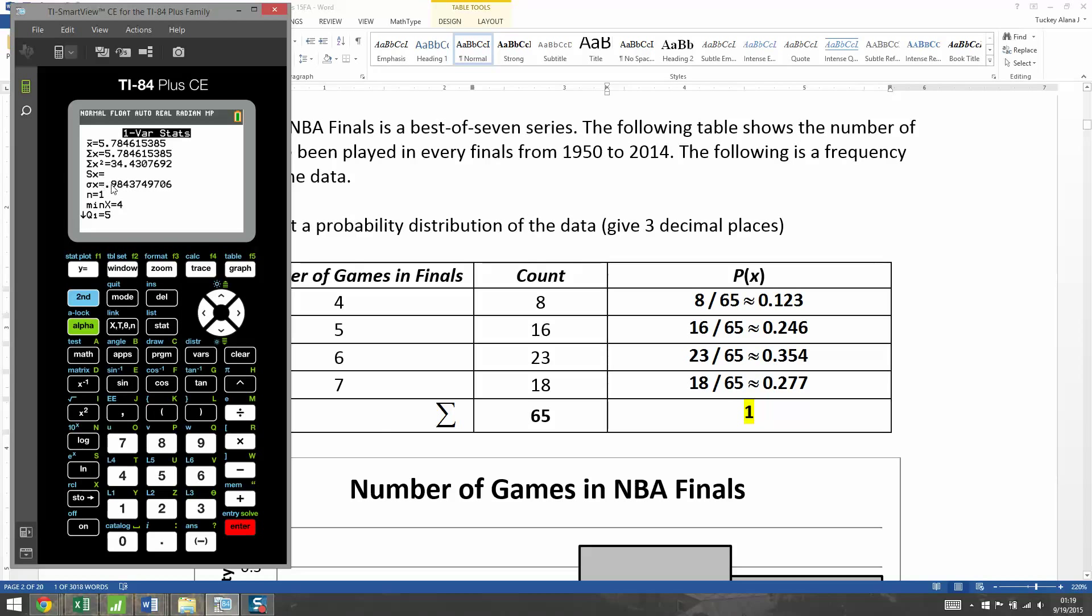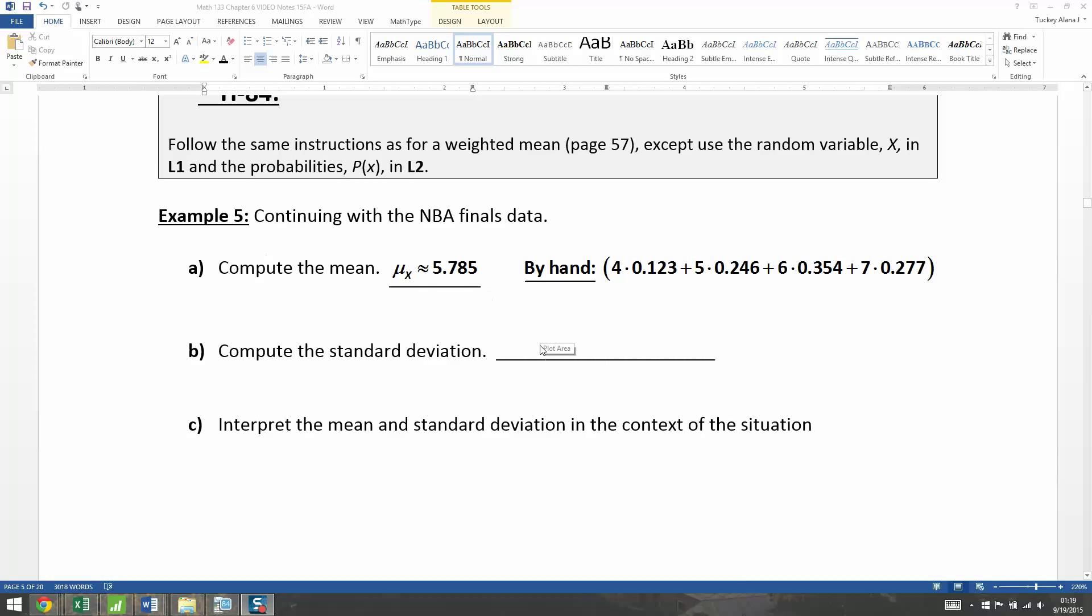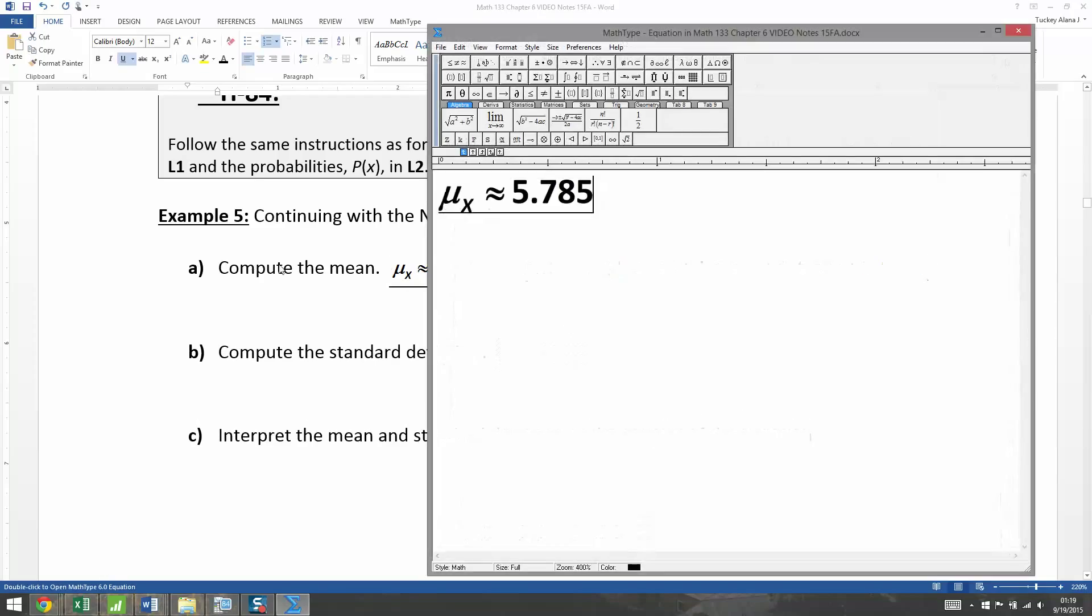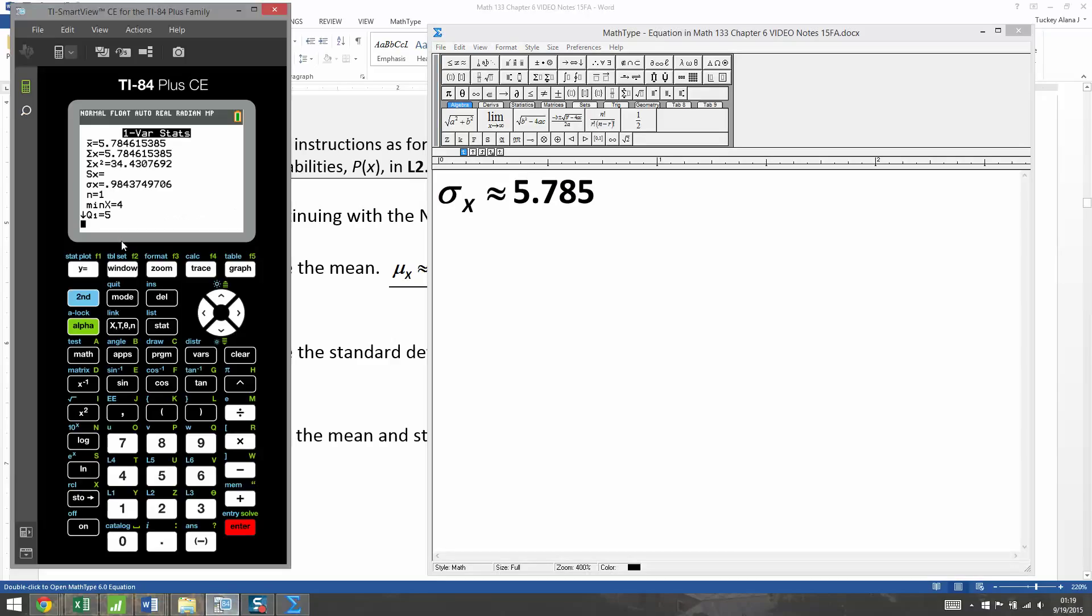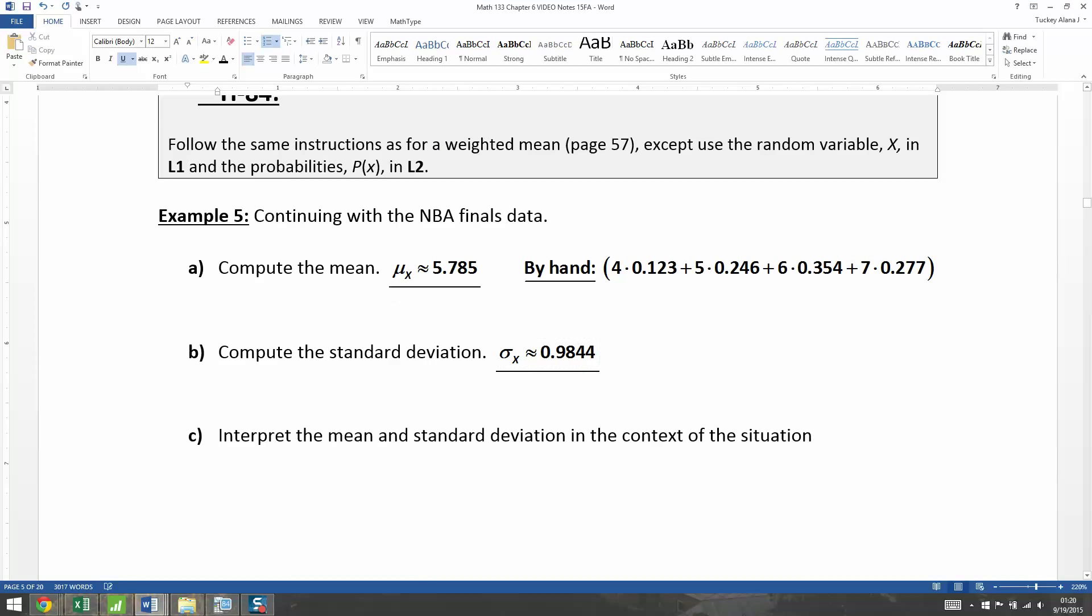So, interestingly enough, the standard deviation is a sigma, which makes sense because the mean was a mu. So, let me put that notation in there. The sigma, it's sigma sub x, just like it's mu sub x, but it's Greek, so sigma. And it was, let's think, 0.984 or so. Approximately. Heck, I'll even go one more. 0.9844.